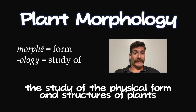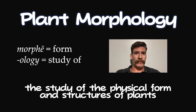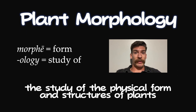Plant morphology is defined as the study of the physical form and structures of plants. We can look at the origins of the root word: morphology, with 'morph' being from the Greek meaning 'shape' and 'ology' coming from Latin meaning 'the study of.' So this is basically the study of the shape of the plant and how it's arranged.